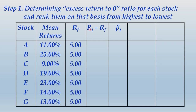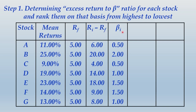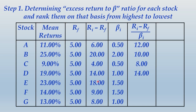Now we determine R minus RF for each stock. For stock A: 11 minus 5 = 6; for stock B: 25 minus 5 = 20; and likewise for all stocks. Beta values from the question are also copied. Now we calculate R minus RF divided by beta: for stock A, 6 divided by 0.5 = 12; stock B, 20 divided by 2 = 10; 4 divided by 0.5 = 8; 14 divided by 1 = 14; 18 divided by 1.5 = 12; 9 divided by 1.5 = 6; and 8 divided by 1 = 8.